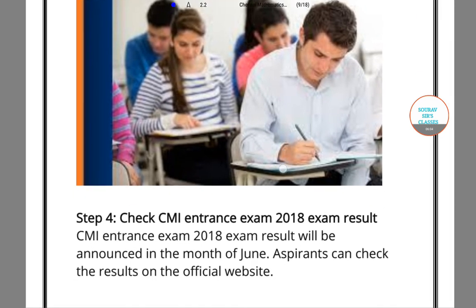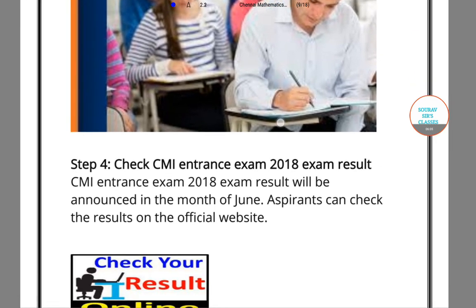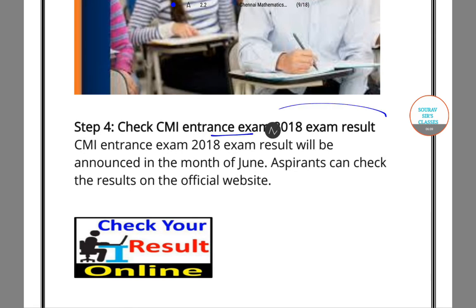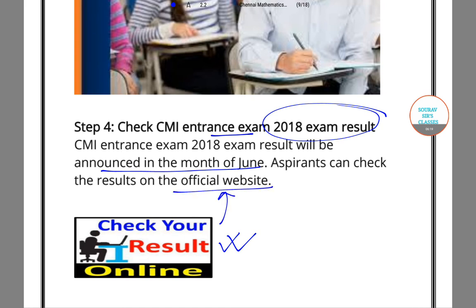Step 4 is to check the CMI entrance exam result 2018. You can check this online, and the results will be announced in the month of June. You can check on the official website of this particular institute.